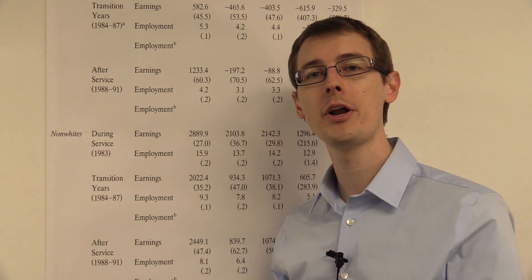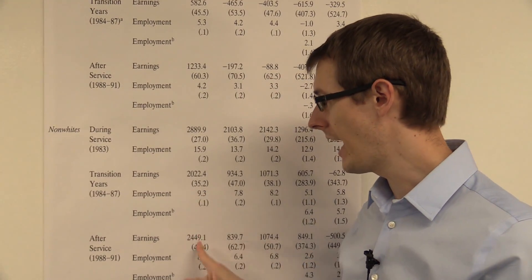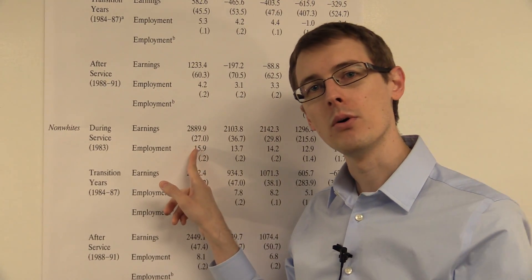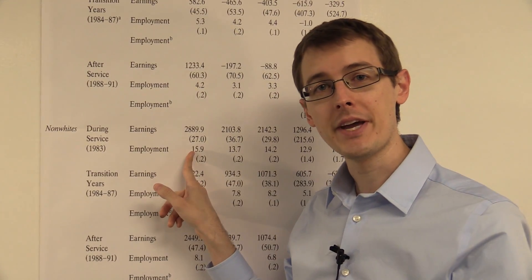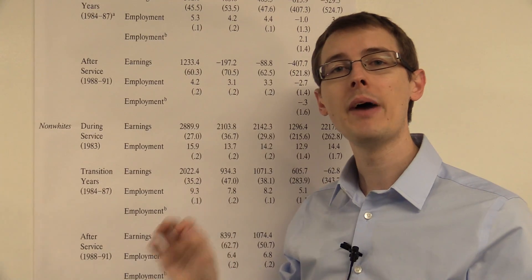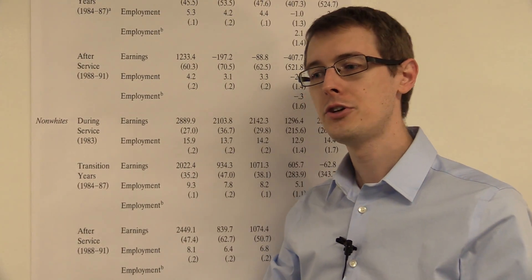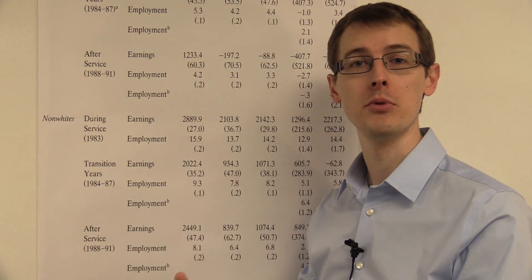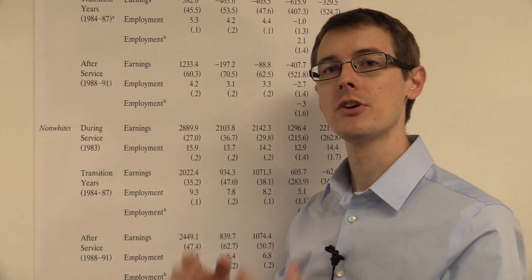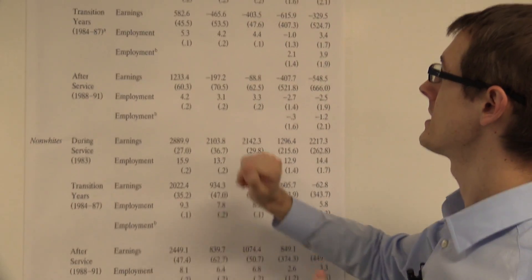And we already know that we might be worried about the selection problem, and these are not actually causal effects. So following Angrist's identification strategy, he's going to use matching or regression to control for other variables that might affect your earnings. So let's see what he gets when he does that.